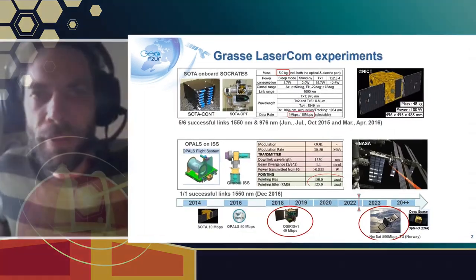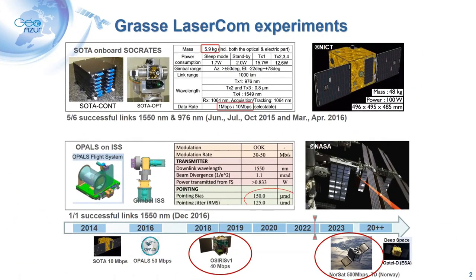This is not the first time we conducted a laser communication experiment at GRAS SLR station. The first was in 2014 with the SOTA payload on the Socrates satellite. The second used the OPALS payload from NASA onboard the International Space Station. The most recent experiment was with OSIRIS at the end of 2018. I will also talk about the next experiment with a satellite from Norway at the end of the talk.